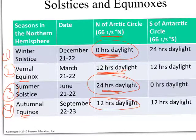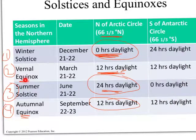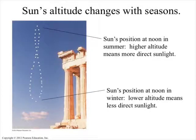The last column of the table shows what's happening in the southern hemisphere. During our winter solstice, if you're near the south pole, you are actually having summer. The equinoxes are the same for both hemispheres. But when we're having summer, the southern hemisphere near the south pole is having winter — there's actually no daylight at all down there, which is a neat phenomenon.